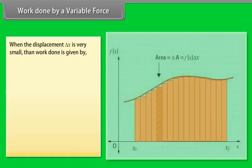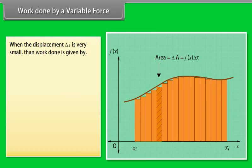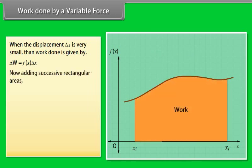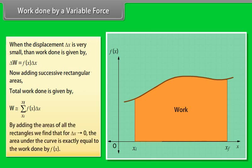Work done by a variable force: When the displacement delta x is very small, then work done is given by delta w is equal to fx delta x. Now adding successive rectangular areas, total work done by w is approximately equals to summation from initial position xi to final position xf of product of fx and delta x.